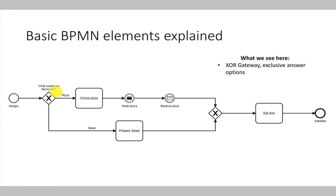Another element of the BPMN modeling language are gateways. A gateway is represented by a diamond shape with a little icon representing what the gateway is about. The first gateway is an XOR gateway — an exclusive OR gateway. When the process arrives at the gateway, a question is asked: 'What would you like to eat?' If we decide to eat pizza, the process takes the upper path: choose a pizza, order it, receive the pizza, eat the dish, and hunger is satisfied. If we instead opt for a salad, we prepare a salad, eat the salad, and the process ends. An XOR gateway enables us to choose either one or another process path.